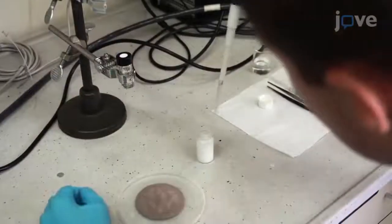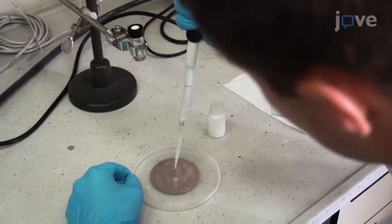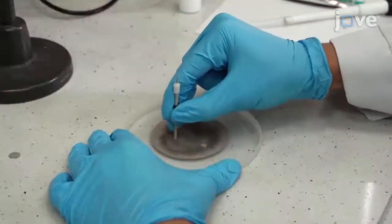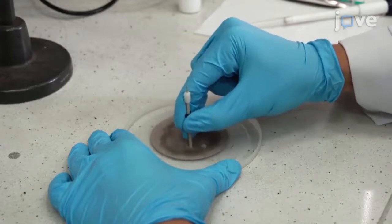Next, mount a polishing cloth on an immobile support and moisten the cloth with several drops of 0.05 micrometer alumina slurry. Polish a 1 mm diameter platinum disc working electrode for 30 seconds using moderate pressure.